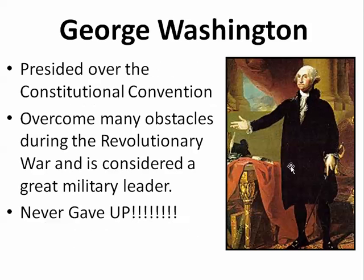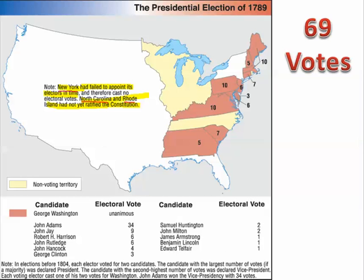The first president we want to talk about is George Washington. He presided over the Constitutional Convention, overcame many obstacles during the American Revolutionary War — the crossing of the Delaware — and never gave up. He showed leadership as a military leader, and in 1789, after the Constitution had been ratified, the first Electoral College elected him unanimously President of the United States. He received all 69 Electoral College votes. The Vice President was elected separately, and John Adams received 34 of the 69 votes, becoming Vice President of the United States.